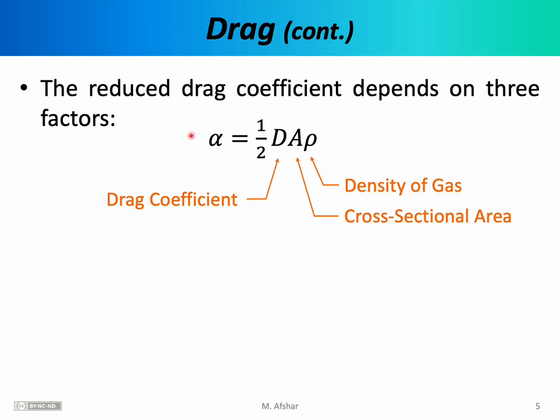For us, what is important is simply how to use the formula. According to it, alpha is equal to one-half times D times A times rho. D is the drag coefficient — don't confuse it with alpha, the reduced drag coefficient. A is the cross-sectional area of the object, and rho is the density of the gas through which the object is moving.